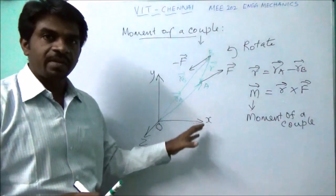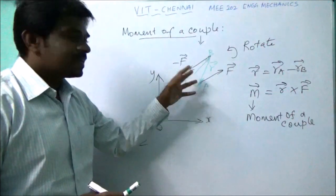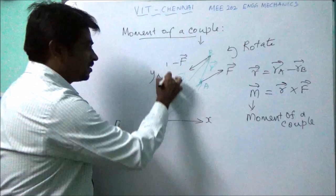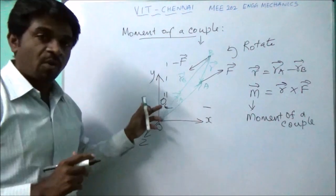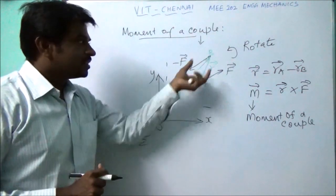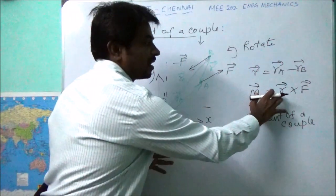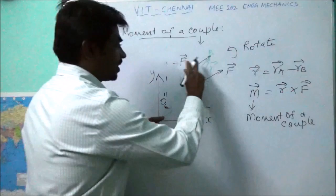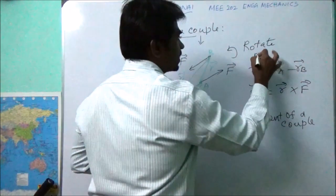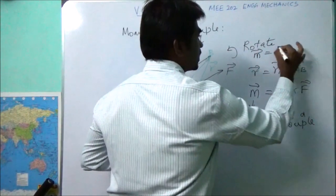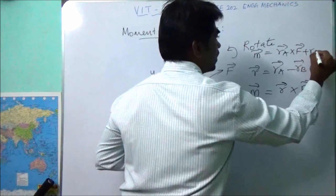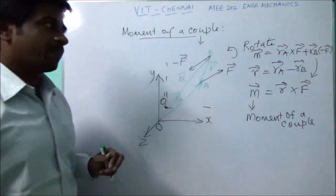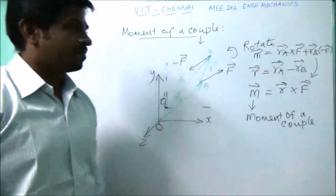The important point here is that the r vector is independent of the choice of O. If we take moment about O-dash, the r is not going to change — we will still get r vector. We express this as: M vector equals r_a vector cross F vector plus r_b vector cross minus F vector, which leads to r cross F vector. This is nothing but the Varignon's principle.